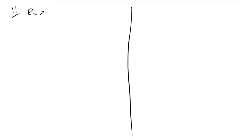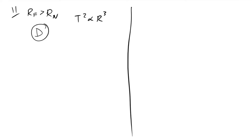Question 11: satellites F and N have the same mass, but orbital radius of F is greater than N. By Kepler's third law, T² is proportional to R³. Bigger R means bigger T. The answer is D.